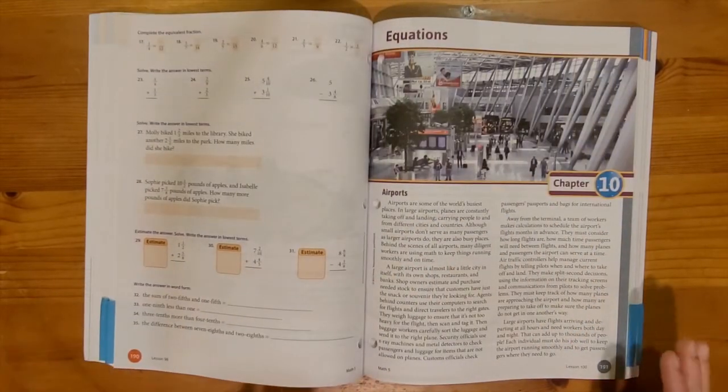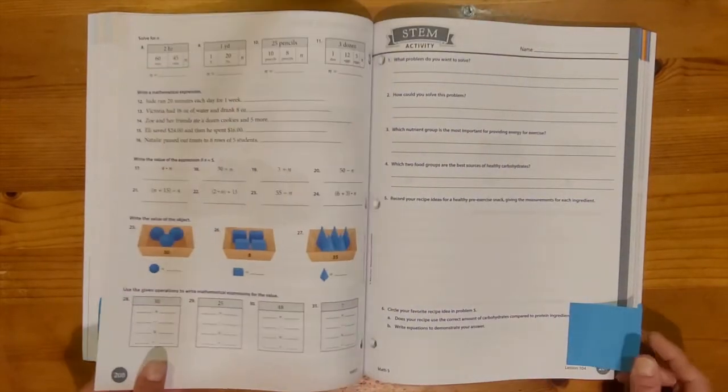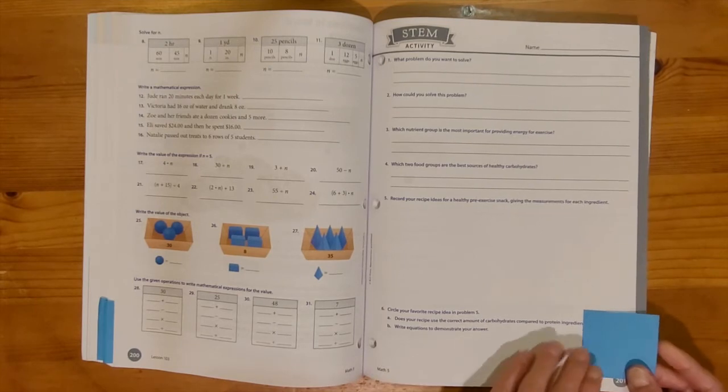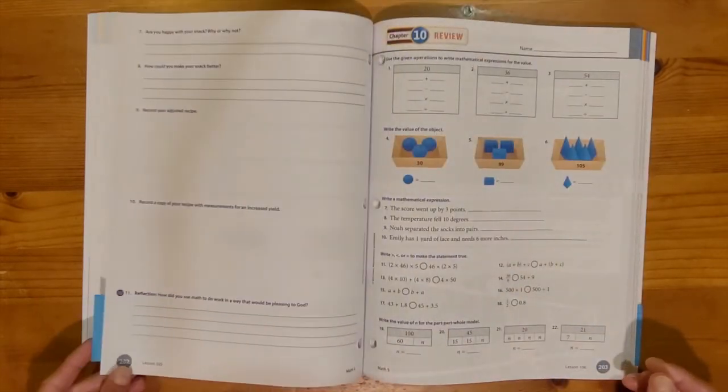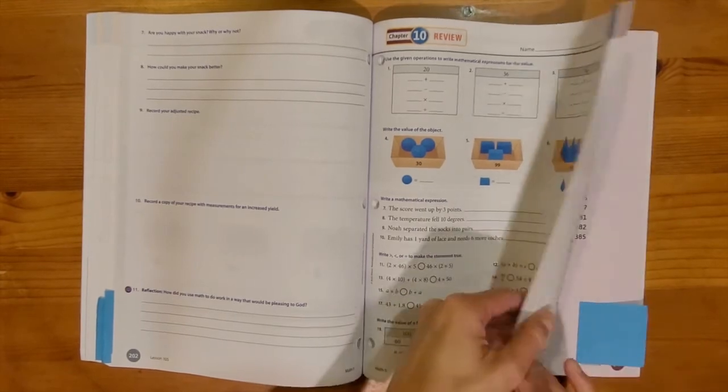Each chapter does end with a chapter review to go over all the main concepts from the chapter. And then we would start the next chapter with another aviation themed page. Remember those STEM activities on the even chapters, those worksheets are also mixed into this book.